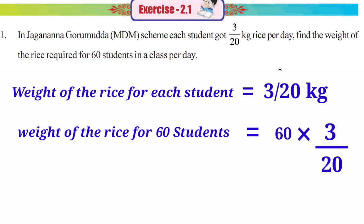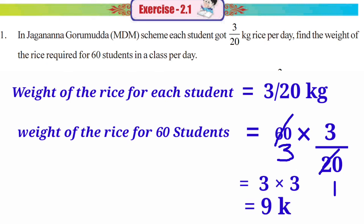Cancellation is possible here. 20 and 60 cancel — 20 into 1 is 20, 20 into 3 is 60. Remaining: 3 multiplied by 3, that is equal to 9 kg. So the required answer is 9 kg. The weight of rice for 60 students is equal to 9 kg.